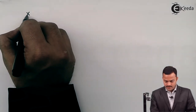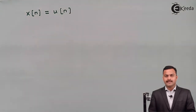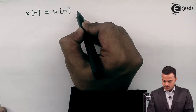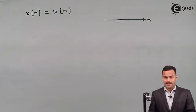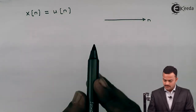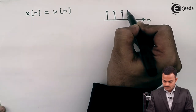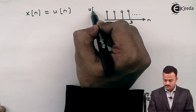Hello friends. In this video we are going to see how to determine whether a given signal is an energy or a power signal. Let's take a simple example: X of n equals u of n, which is a unit step function. Plotting this with respect to n, for any value of n from 0 to infinity the signal value is 1. This is the basic fundamental unit step signal u of n.